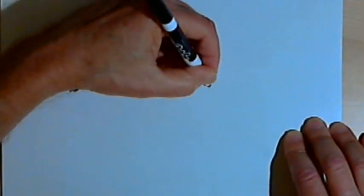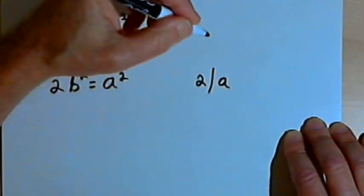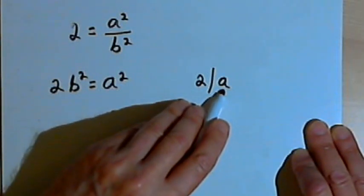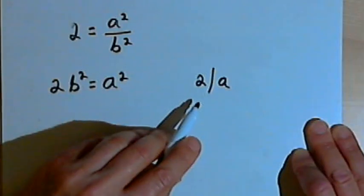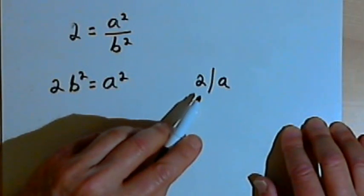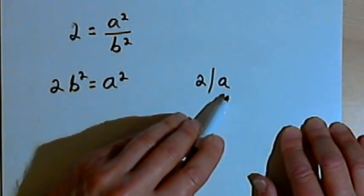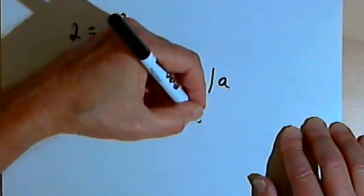So over on the side here, I'm going to write 2 divides a. So remember, if 2 is a divisor of a, if 2 divides a, then that means there's some number that I can multiply by 2 in order to get an a. So I'm going to call that number k.